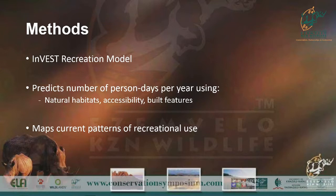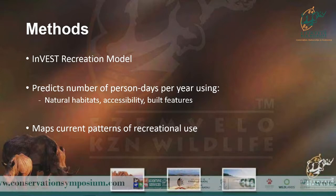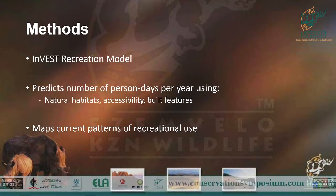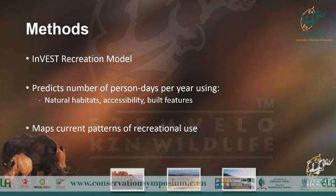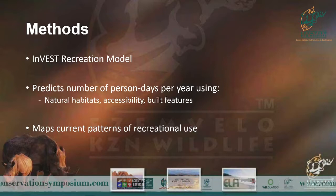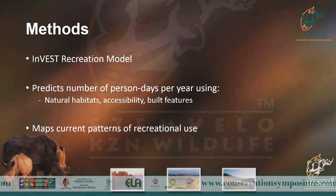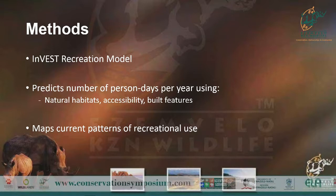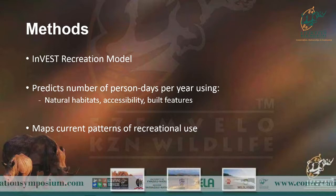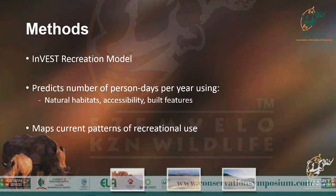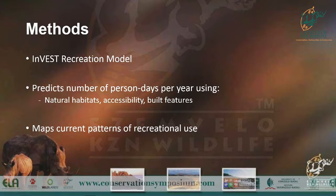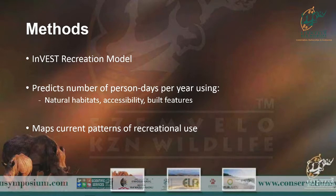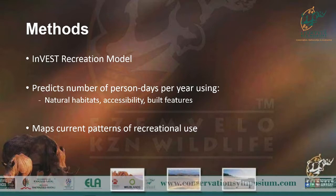The outputs are maps showing current patterns — the current recreational use of a certain park or reserve. It also gives predictions: if a certain landscape or habitat changes, or a predictive variable changes, this is how it affects people visiting the area.